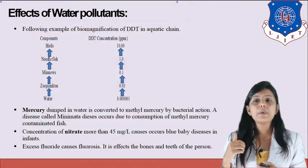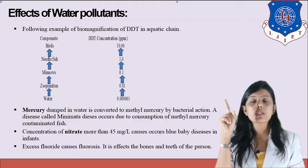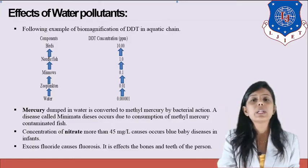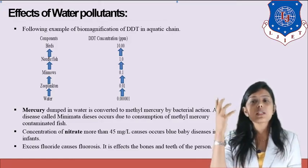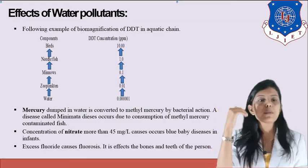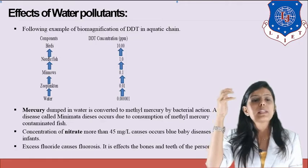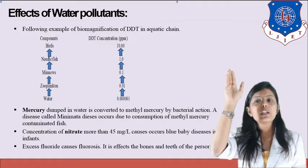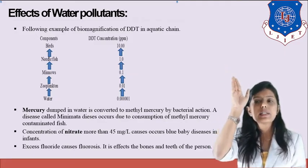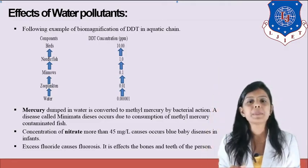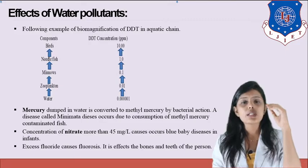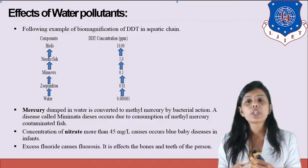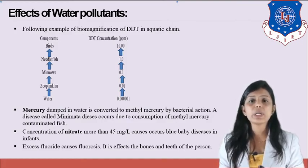As an example of biomagnification in water: the initial concentration of a toxic compound in water is 0.00001 ppm. As it accumulates in zooplankton, the concentration becomes 0.01 ppm. From zooplankton it goes to minnows at 0.01 ppm, then to needle fish at 1 ppm, and finally a bird eating the needle fish has a concentration of 10 ppm. At each successive level of the food chain, the concentration of the toxic compound increases.